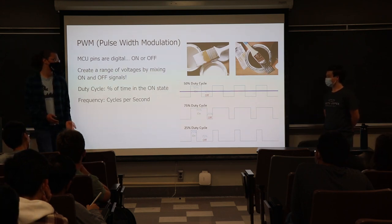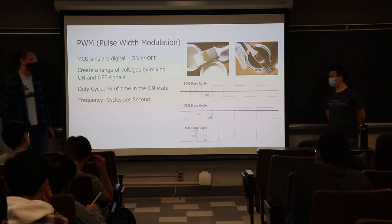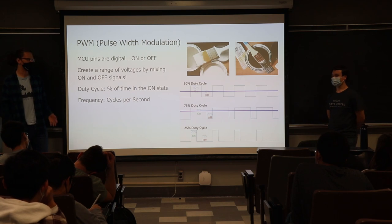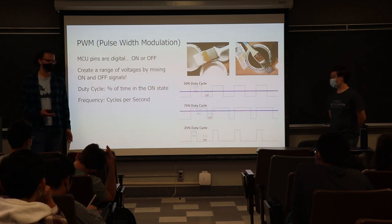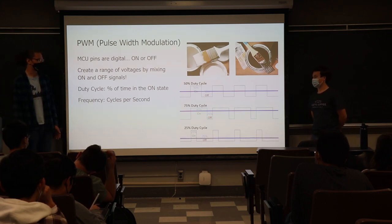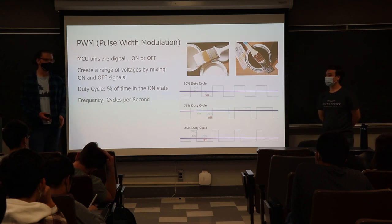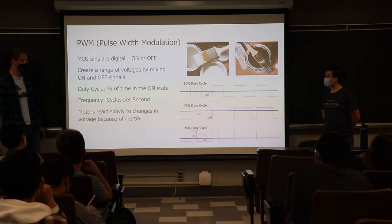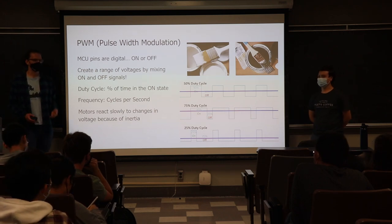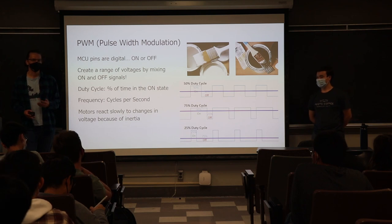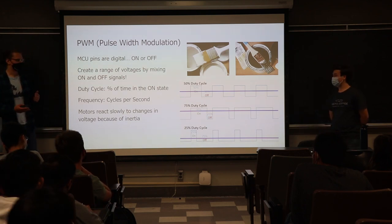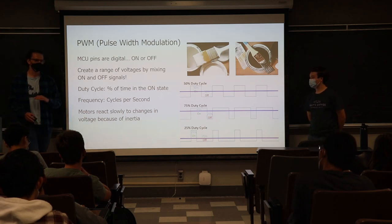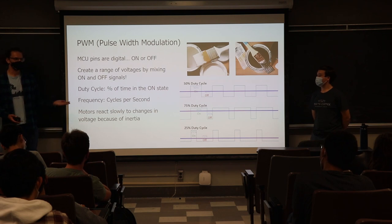At 75% duty cycle — on 75% of the time, off 25% — the motor runs faster because the pin is on more often. At 25% duty cycle, it runs slower because the pin is off more than it's on. You might worry that rapidly switching on and off would be jerky, but motors react slowly to changes because they're physically moving objects, and they also act as inductors, so the result looks pretty smooth. We can use PWM to control motor speed effectively.